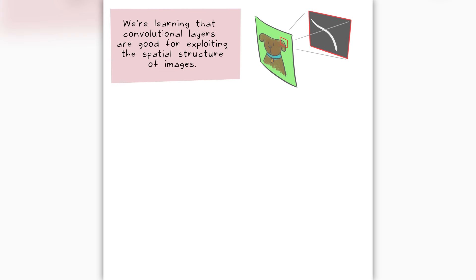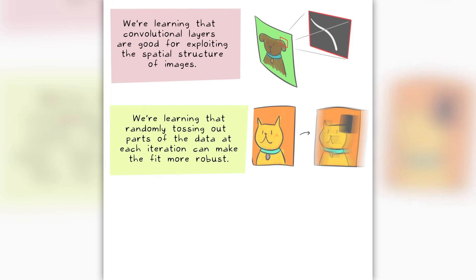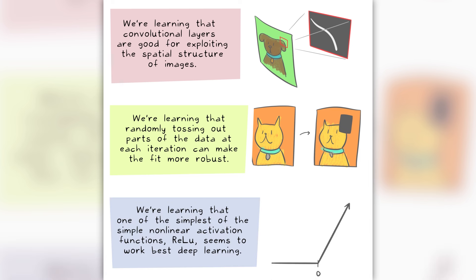We're learning that convolutional layers are good for exploiting the spatial structure of images. We're learning that randomly tossing out parts of the data at each iteration can make the fit more robust. We're learning that one of the simplest of the simple nonlinear activation functions, RELU, seems to work best in deep learning.